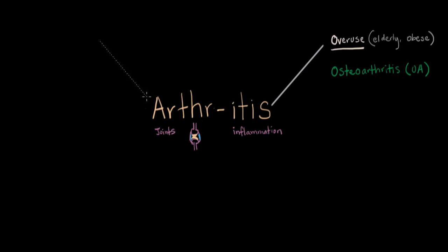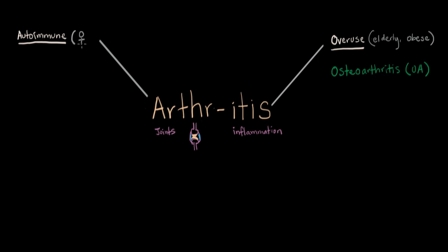The second big category — and it really is a big category because it includes a lot of different diseases — is autoimmune. 'Auto' means self, and 'immune' refers to our immune system, which usually helps us fight off invasion from the environment. Essentially, the body is attacking itself. Famous diseases in this category include lupus and Crohn's disease, and they're often systemic, meaning they affect many different parts of the body. The population most likely to have these diseases would be females, usually middle-aged, though of course men get them too.